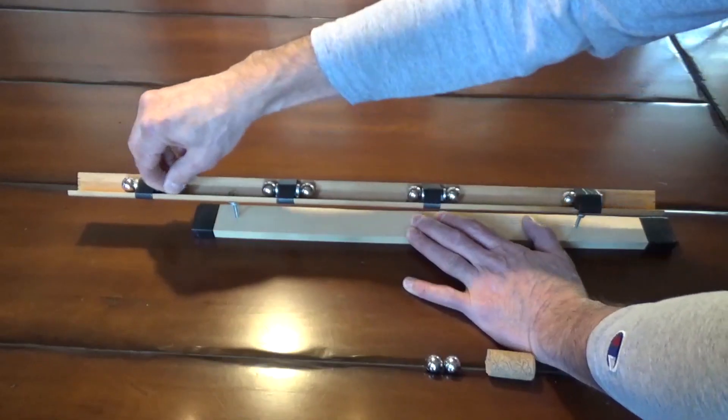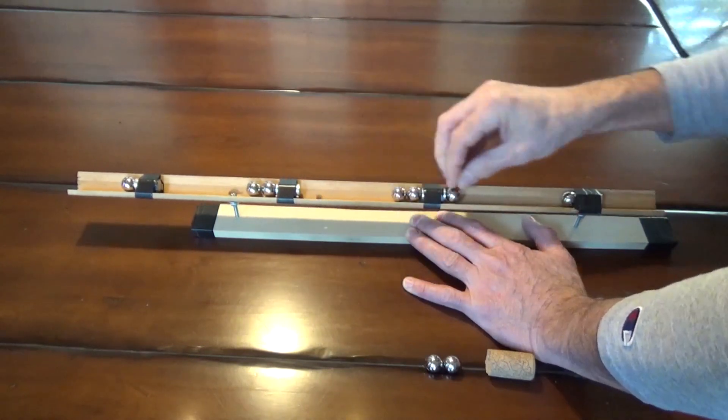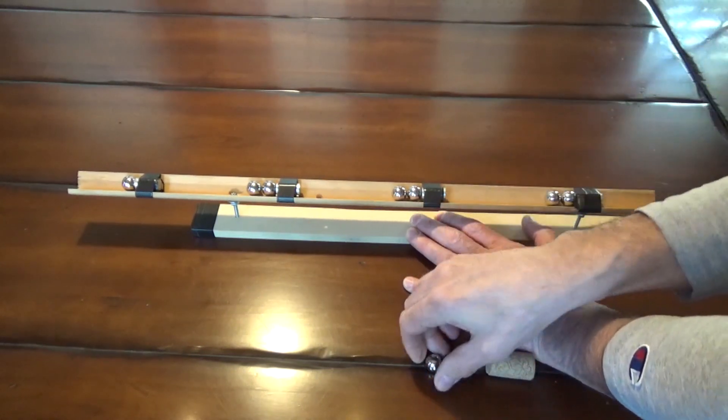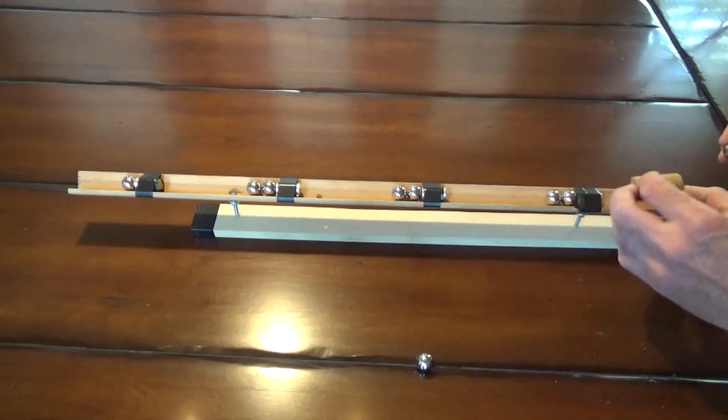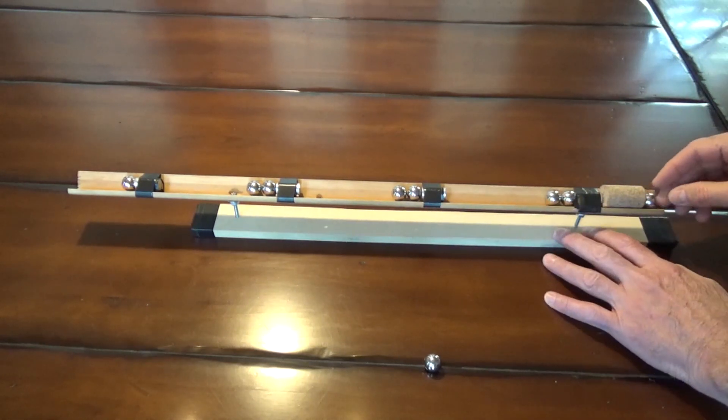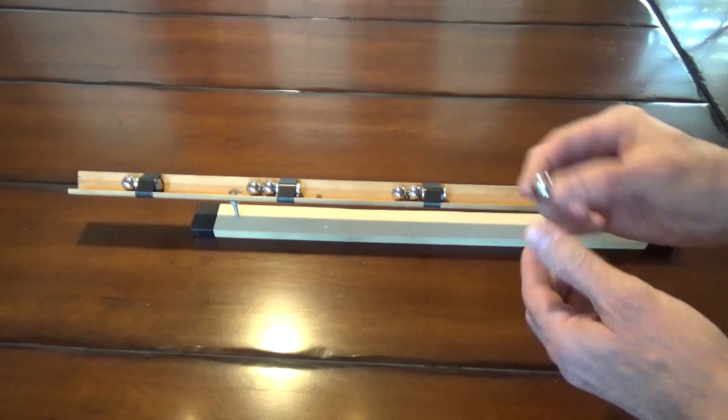So here's how you reload the thing. You have to pull each ball back. So I have a pair in each stage. Put my safety cork back. And the trigger ball. And then the projectile up front.